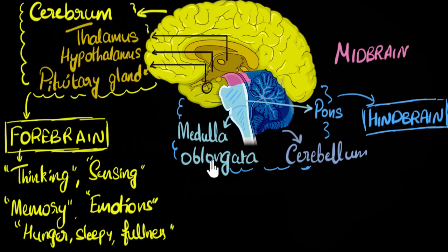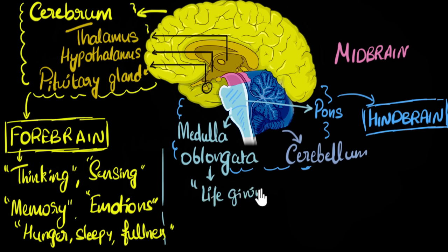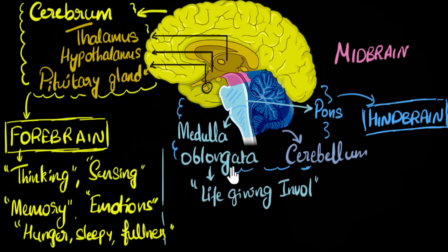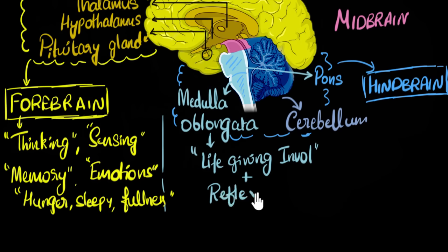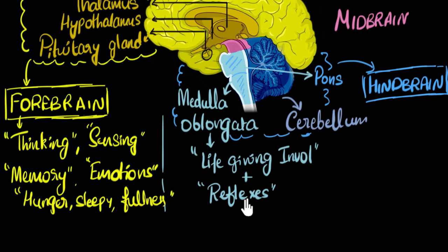What does the medulla oblongata do? It controls most of the life-giving involuntary processes — the most essential ones for life, like your heart beating, your breathing, and digestion. Along with that, it also controls some of your reflexes. You may wonder: isn't that controlled by the spinal cord? Yes, some reflexes are controlled by the spinal cord, but some reflexes — like sneezing and coughing — are controlled by your medulla oblongata. The idea is that reflexes are not controlled by the thinking part of the brain; none of the reflexes are controlled by the forebrain. But the medulla does control some reflexes as well.